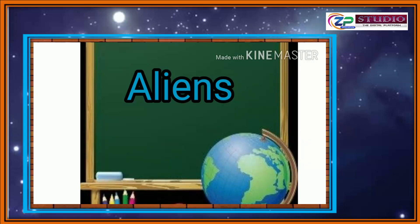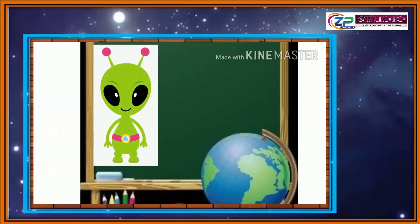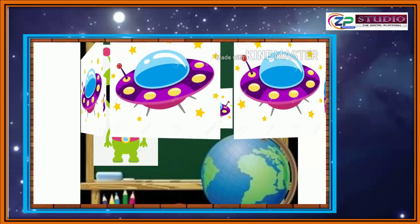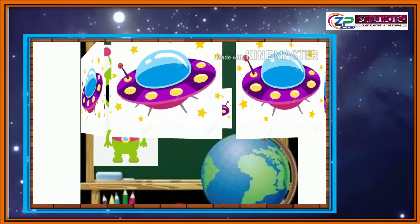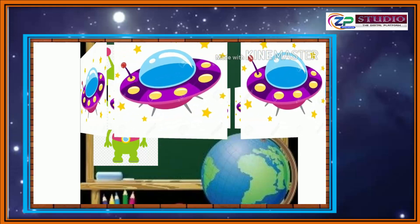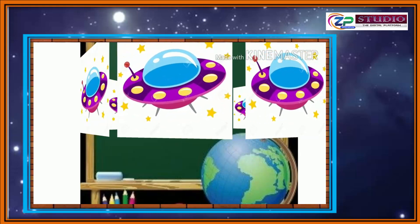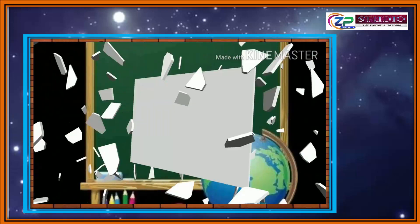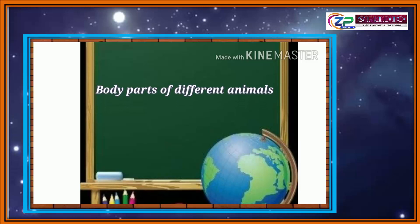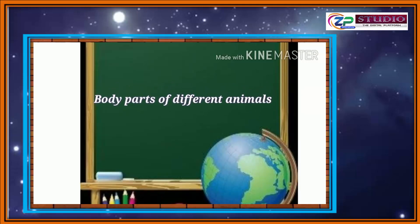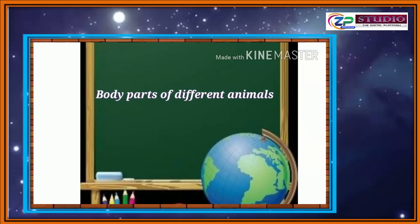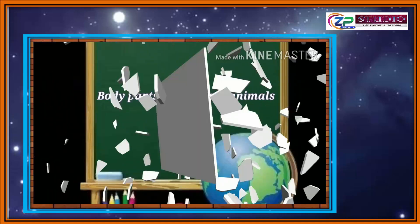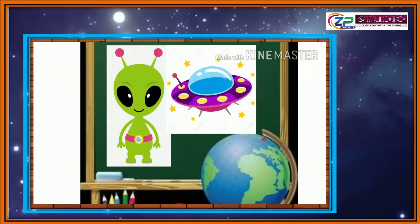Aliens can be imaginary images or imaginary human beings from other planets. But man always thinks that there may be other organisms or human beings like us on other planets, and so the idea of aliens came into the minds of many people. Now in this chapter, the alien concept has been taken for the introduction of kids. We will take an activity for the identification of different body parts of organisms on our Earth, and also identify the body parts of aliens and their spaceships.